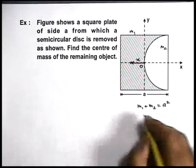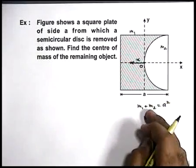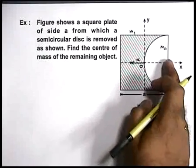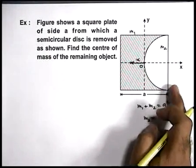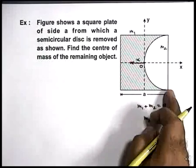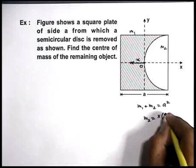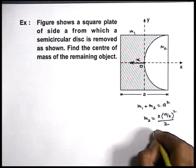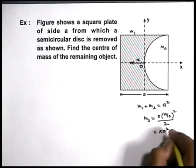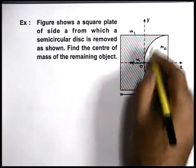Now if we find out the value of m2, its area can be directly written as πr² by 2, where the radius of this disc will be a by 2. So in this situation if radius is a by 2, mass m2 can be written as π into (a by 2)² by 2. So this will be πa² by 8, which is the mass of this semi-circular disc.